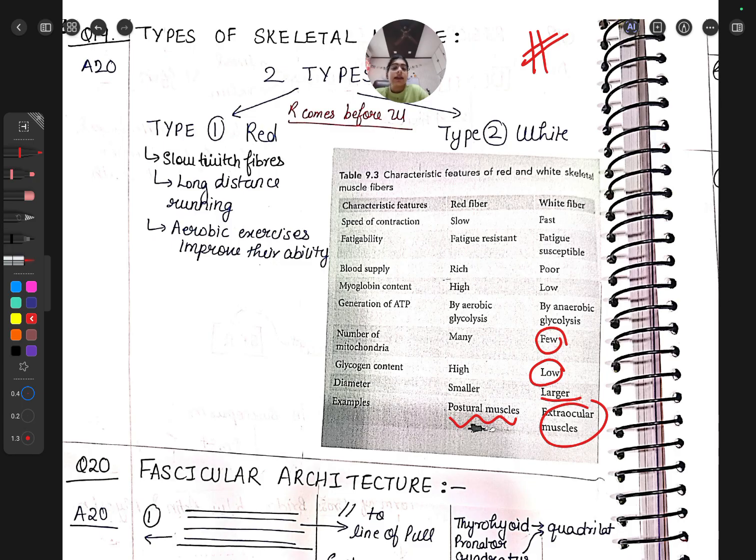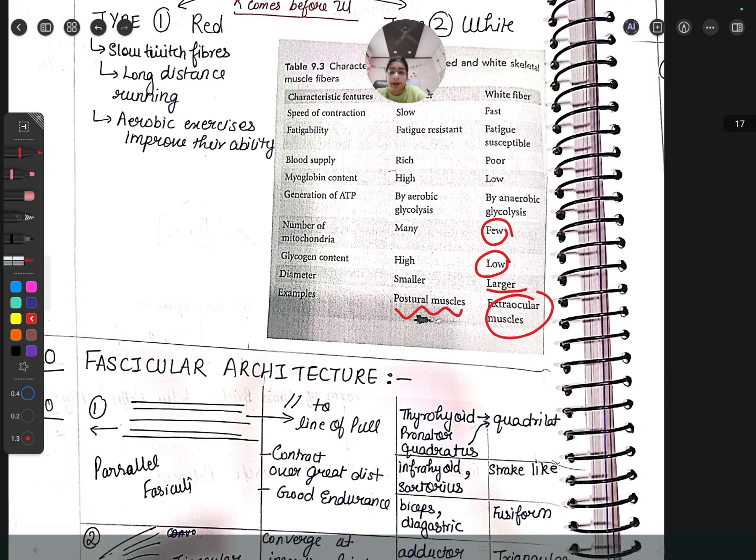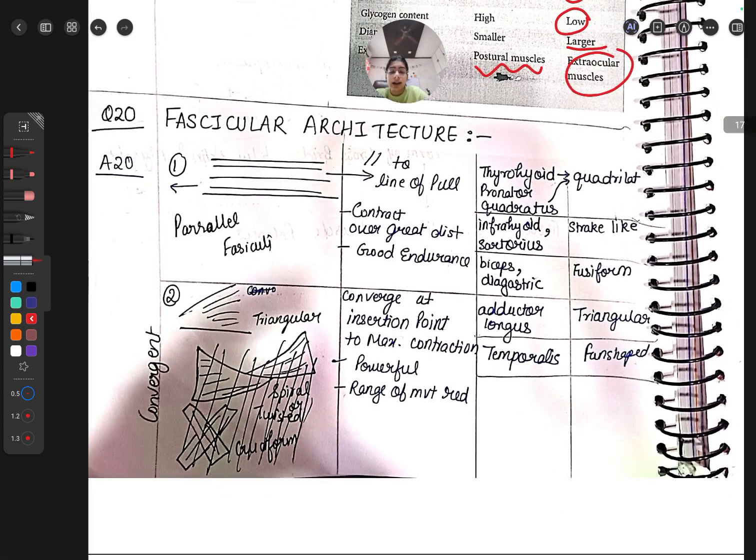Why are they white? Learn by concept - white fibers have more sarcoplasmic reticulum, more calcium, so more contractions, that's why fast. Red fiber has more myoglobin like hemoglobin, so more energy reserve for long term use like long distance runners. Next comes fascicular architecture.